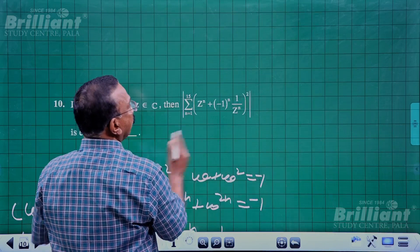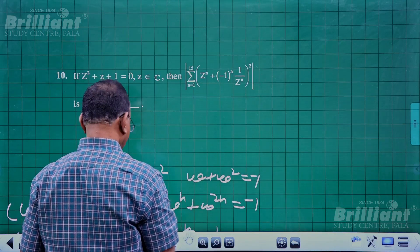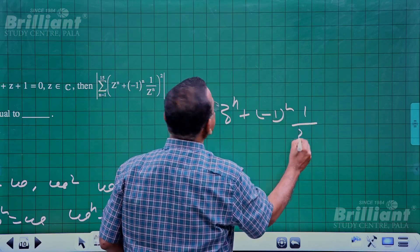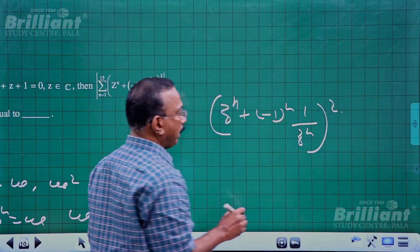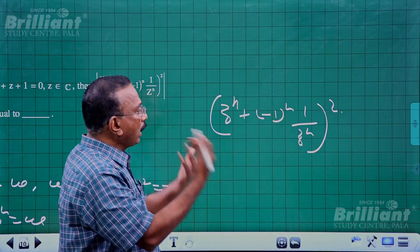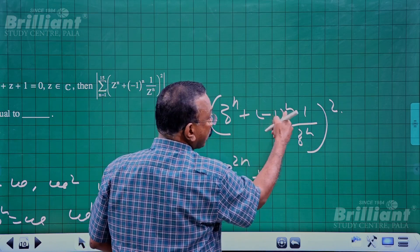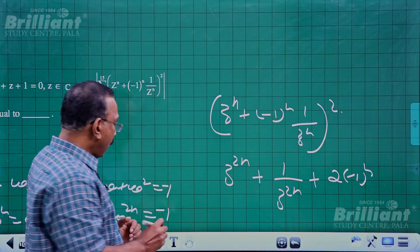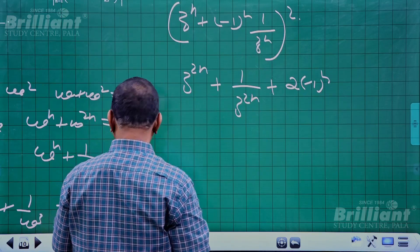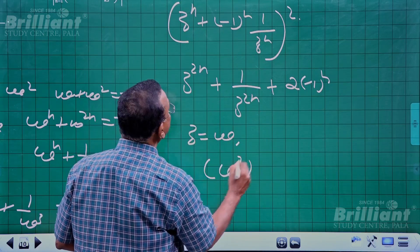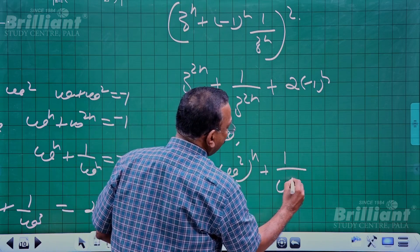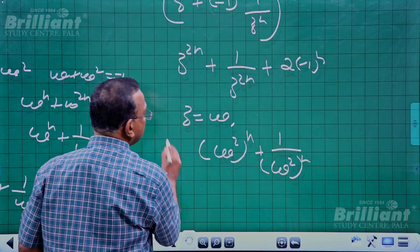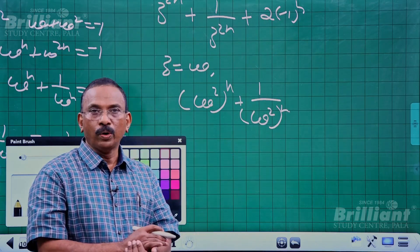Coming back to the problem, we need to find the modulus of the expression Σ(n=1 to 50) of [zⁿ + (-1)ⁿ/zⁿ]². Squaring gives z^(2n) + 1/z^(2n) + 2(-1)ⁿ. For z = ω, this becomes ω^(2n) + 1/ω^(2n) + 2(-1)ⁿ. Depending on whether 2n is a multiple of 3, each term contributes -1 or 2 to the sum, and the (-1)ⁿ terms cancel in pairs. The final sigma sum yields 2.